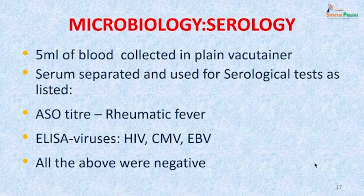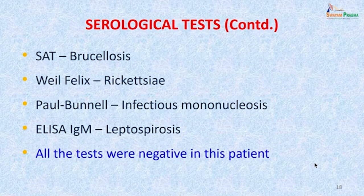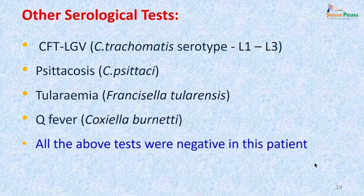Since the patient had shown gram-positive cocci, ASO titers were done — within normal range for rheumatic fever. ELISA tests for HIV, CMV, and EBV were all negative. Other serological tests done included the Standard Agglutination Test (SAT) for brucellosis, Weil-Felix test for rickettsia, Paul-Bunnell test for infectious mononucleosis, and ELISA IgM for leptospirosis — all negative. Complement fixation tests for Chlamydia trachomatis, Chlamydia psittaci, Francisella tularensis, and Q fever were also negative.